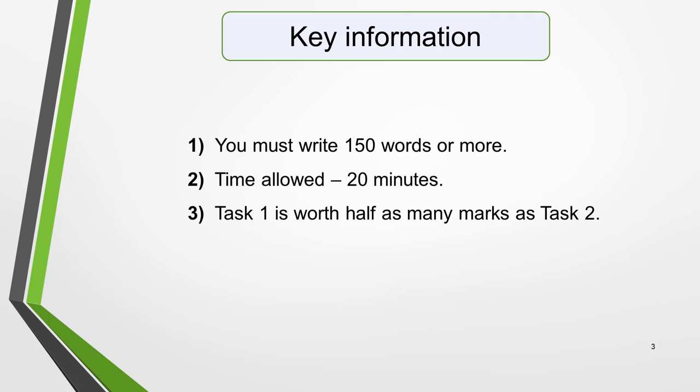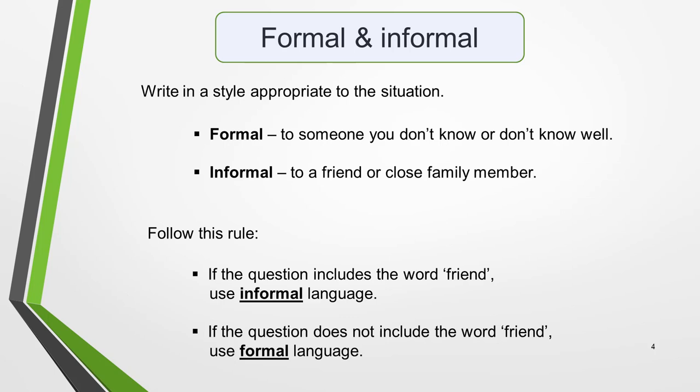First, the key information. You must write 150 words or more. If you write less than 150 words, you're unlikely to get more than band 5 for task achievement, as you won't have fulfilled the marking criteria. You have around 20 minutes to plan and write your essay. Task 1 contributes half as many marks as Task 2, so Task 1 is worth 33% of the total mark in the writing test. For General Writing Task 1, you must write a letter requesting information or explaining the situation in relation to a specific circumstance.